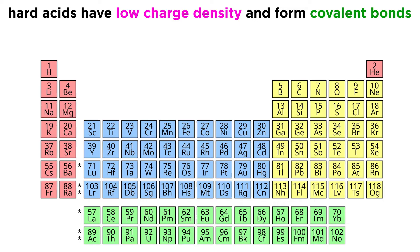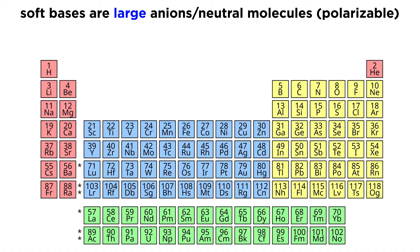Soft acids have a lower charge density and form bonds that are more covalent in nature. Late 4d and 5d transition metals tend to be soft due to their larger size and polarizability, and these usually have charges of only 1+ or 2+.